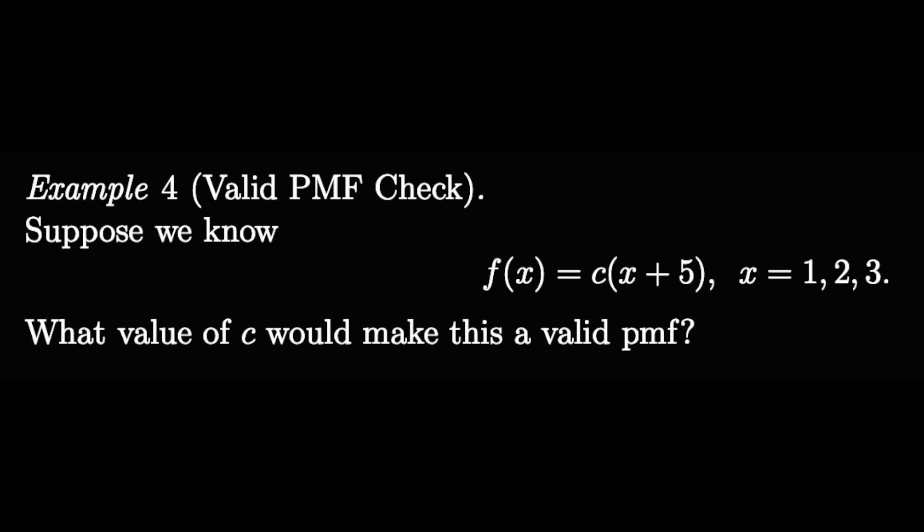Now example four says suppose we know that f of x is equal to c times x plus five, where x is from one, x equals one, two, and three. What value of c would make this a valid PMF?